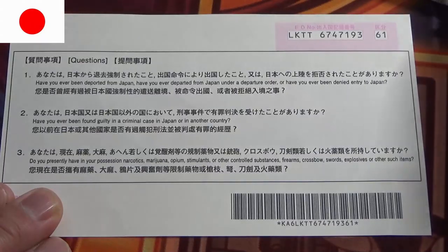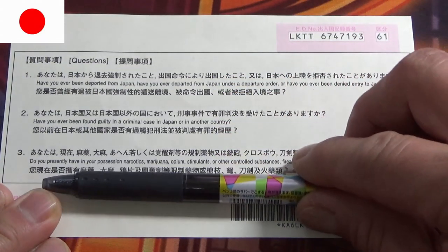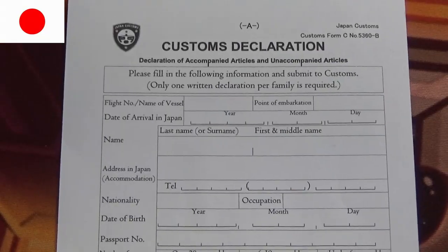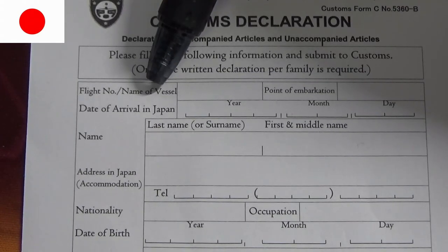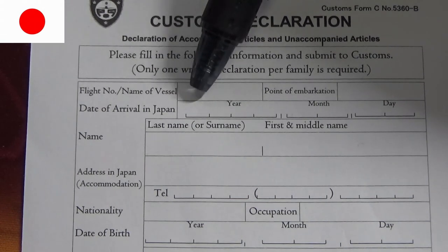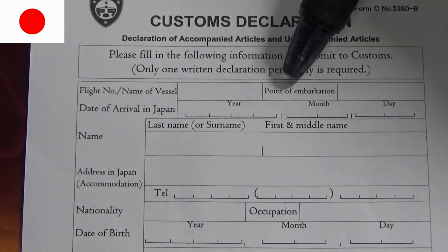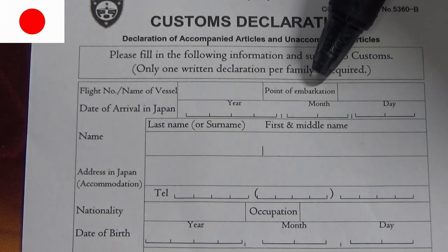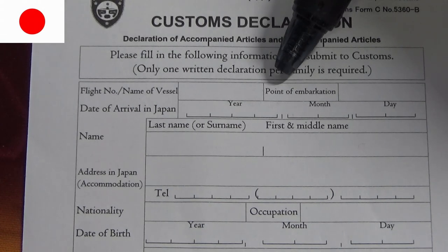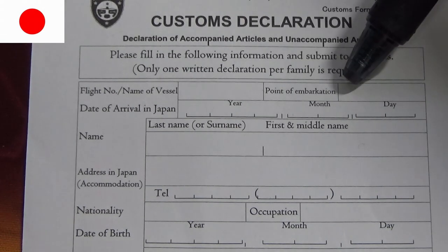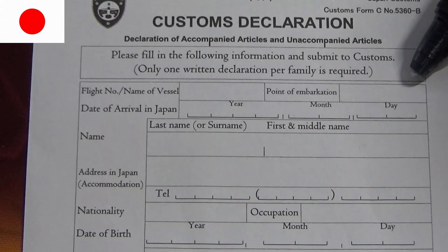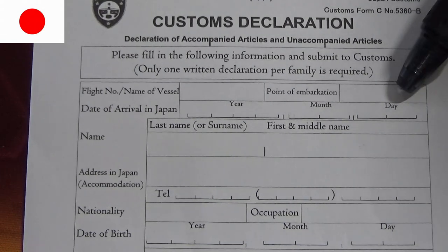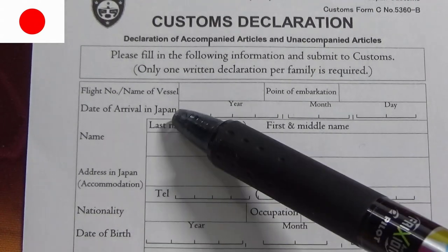On the back is a description of what I just talked about. Next is the customs declaration form. Let's start at the top — flight number, name of vessel. So if it's Japan Airlines 111, JAL 111. Point of embarkation: that is where you got on, the name of the place where you first got on the airplane. So if it's Chicago, the name of the airport — O'Hare Airport, Chicago. If it's in Toronto, it's Pearson International, Toronto. Date of arrival in Japan — so let's say it's today, February 15th, 2023. You write the date: year 2023, month 02, day 15.